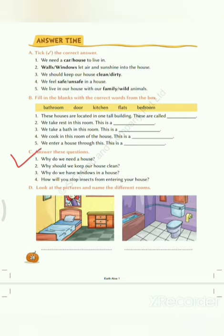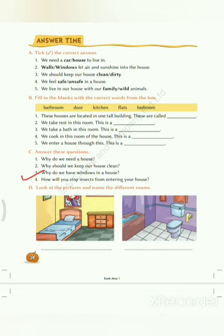Now answer these questions. Question number one: why do we need a house? We need a house to live in. Question number two: why should we keep our house clean? We should always keep our house clean because a dirty house has insects and germs that can make us fall sick. Question number three: why do we have windows in a house? Because windows let air and sunshine into the house.